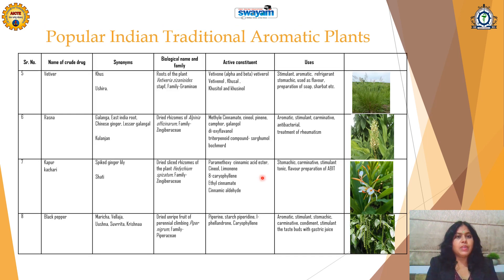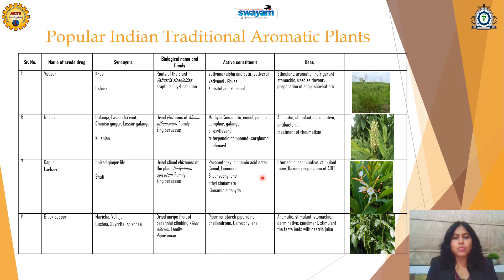Next drug is Vetiver, which is called as Khus or Ushira. It is actually the roots of the plant Vetiveria zizanioides, Family Gramineae. It contains vetiverol, vetivenone, and khusinol. It is stimulant, aromatic, stomachic, and refrigerant. The Khus or Vetiver flavor is used in soaps and sherbets. Even in summer, the roots are useful for their cooling effect.